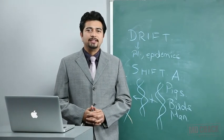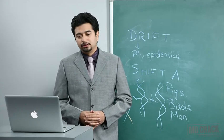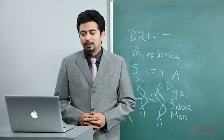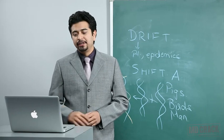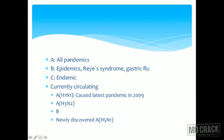Since you know about antigenic drifts and shifts, we can see that influenza A causes all the pandemics, B can cause epidemics, and C is endemic. Additionally, B is also associated with a disproportionate number of cases of Reye's syndrome and gastric flu. Gastric flu is the presence of gastric symptoms, so out of A, B, and C, only B can cause gastric symptoms.